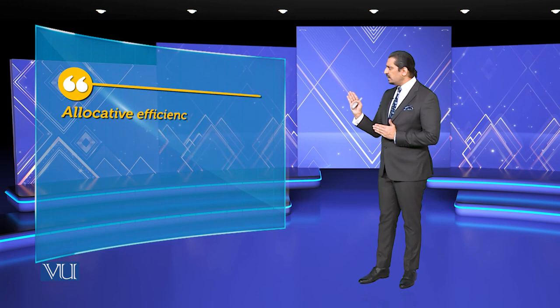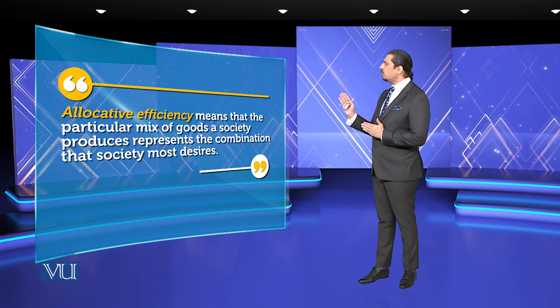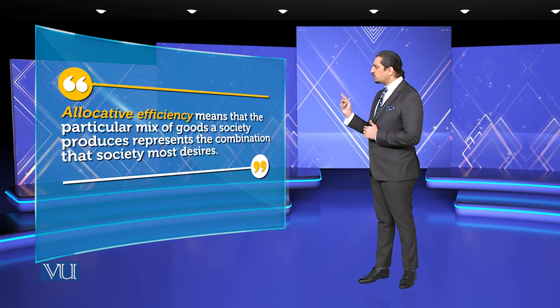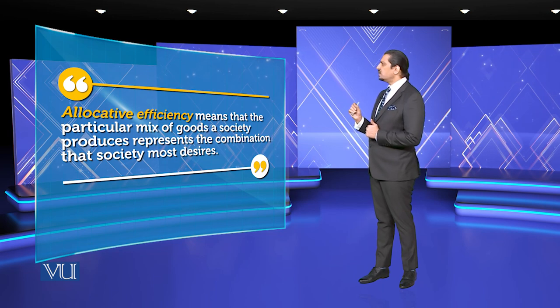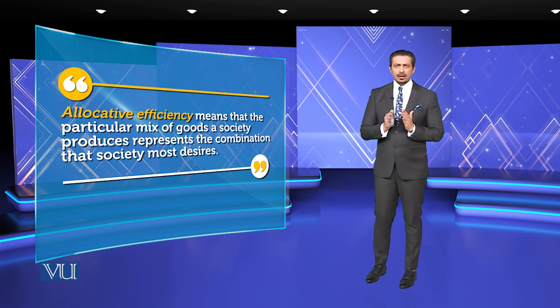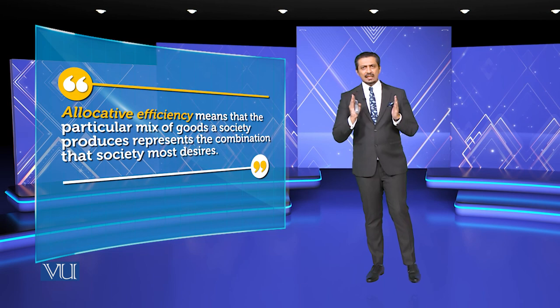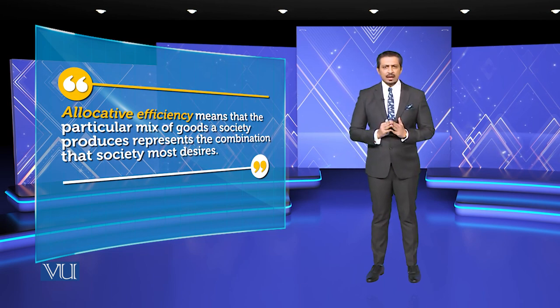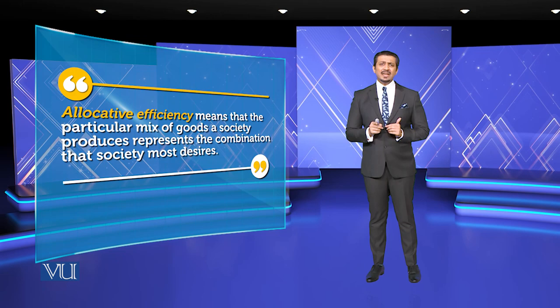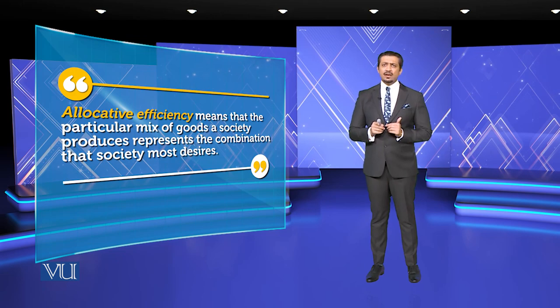Allocative efficiency means that the particular mix of the goods a society produced represents the combination the society most desires. This is what allocative efficiency is about, where productive efficiency is also much important in that way.